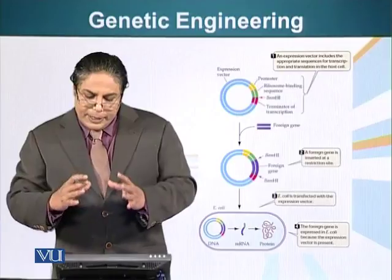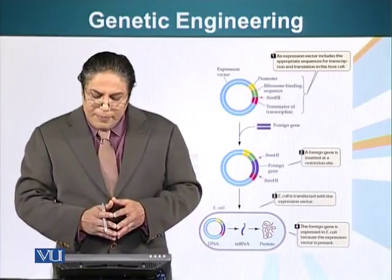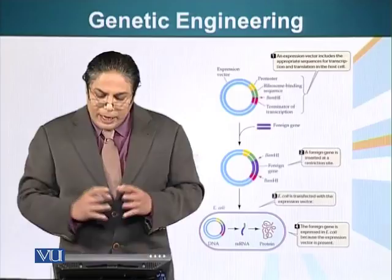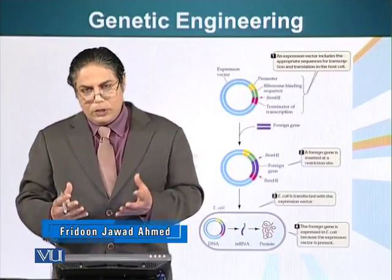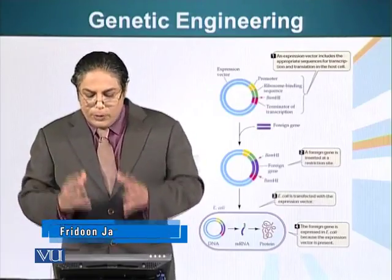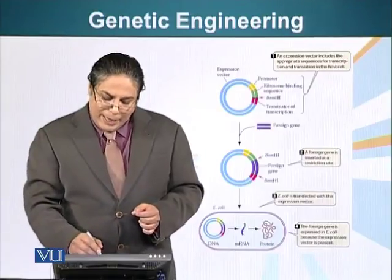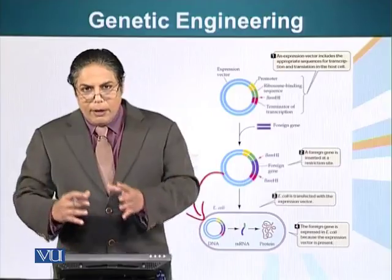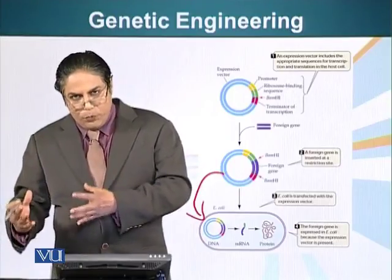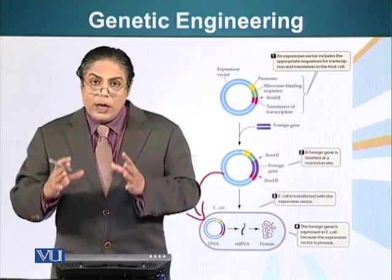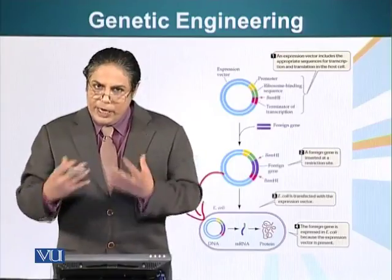Now imagine we have this plasmid or expression vector — we insert a specific gene in it and put it in the bacteria. You may have heard that people make insulin using biotechnology or genetic engineering. We can do the same thing: if we insert the gene for insulin in the expression vector or plasmid and put it back in the bacteria and allow the bacteria to grow, when the bacteria make messenger RNA from our gene, it will be translated into protein and we can harvest the protein from these bacteria. Here we are making these bacteria do work for us — making a special protein which we need for our health.